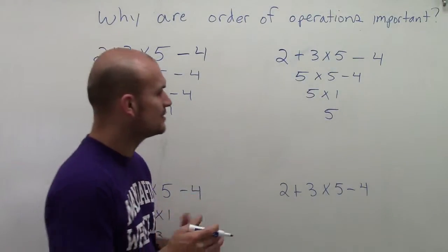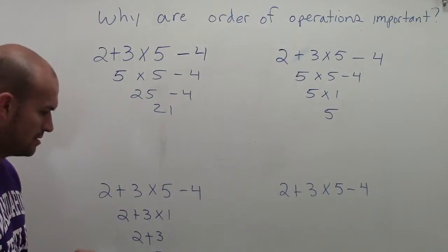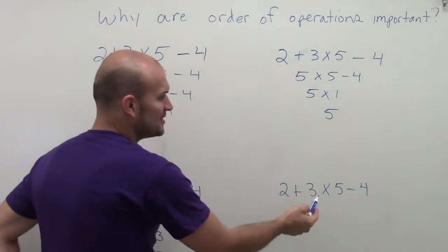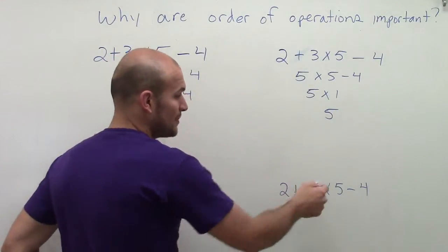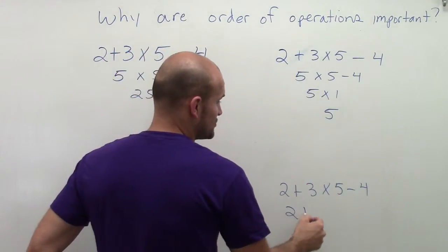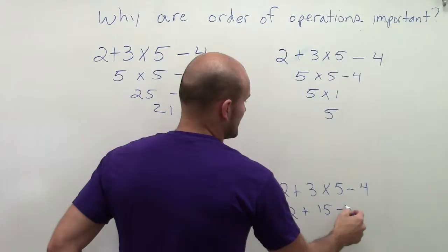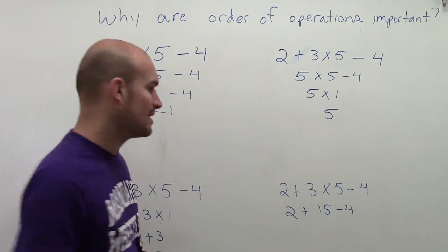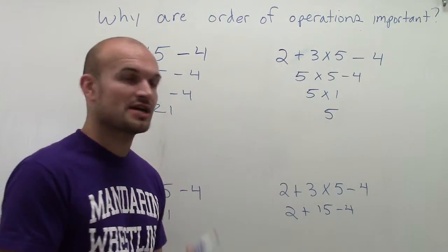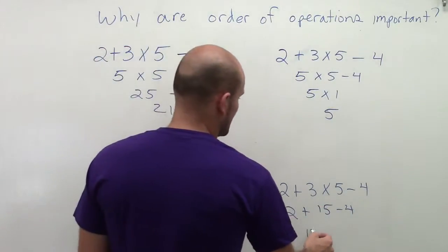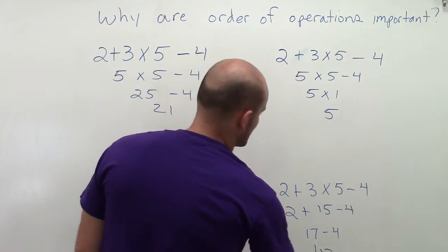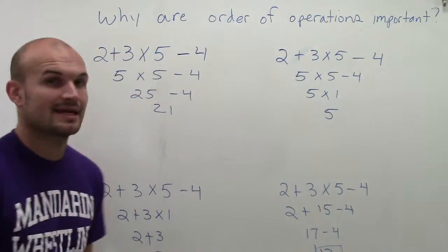So now let's take a look at one more. So first thing you're going to want to do, and actually by following the order of operations, would use multiplication. So I'd have 2 plus 15 minus 4. Then what I can do is I just do addition and subtraction from left to right. So 2 plus 15 is 17 minus 4 ends up giving us 13, which is actually the correct answer.